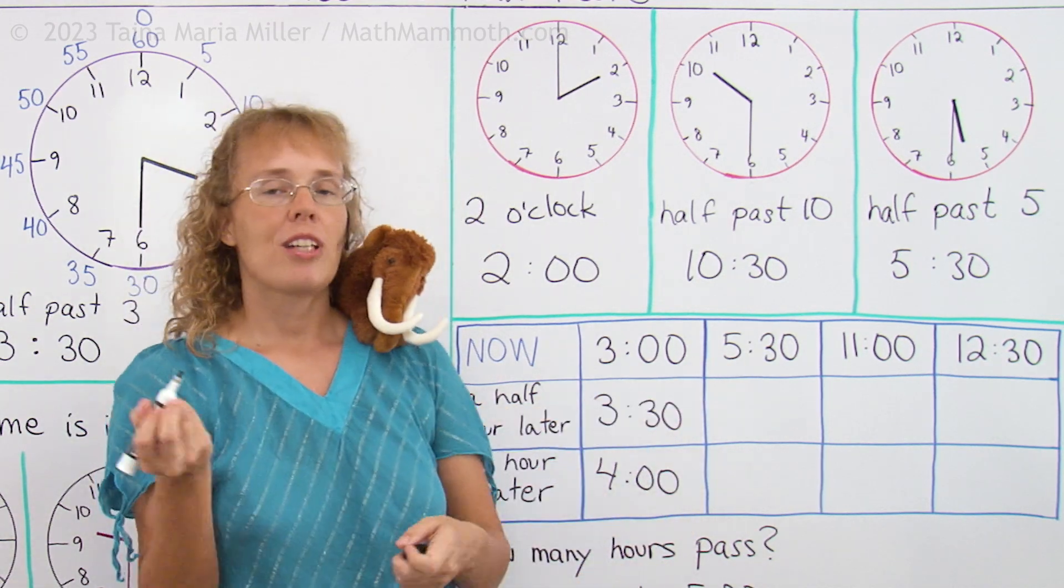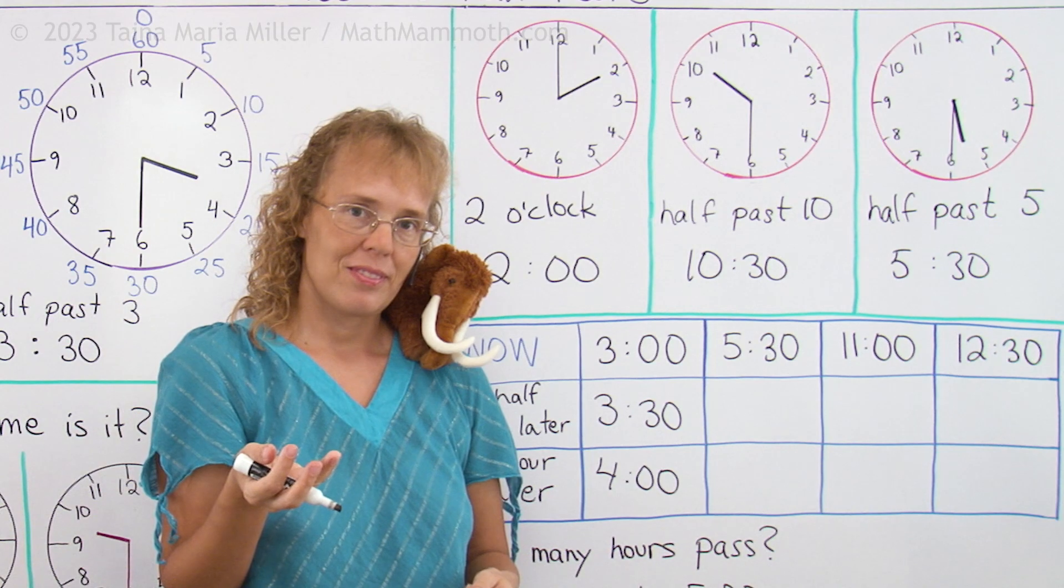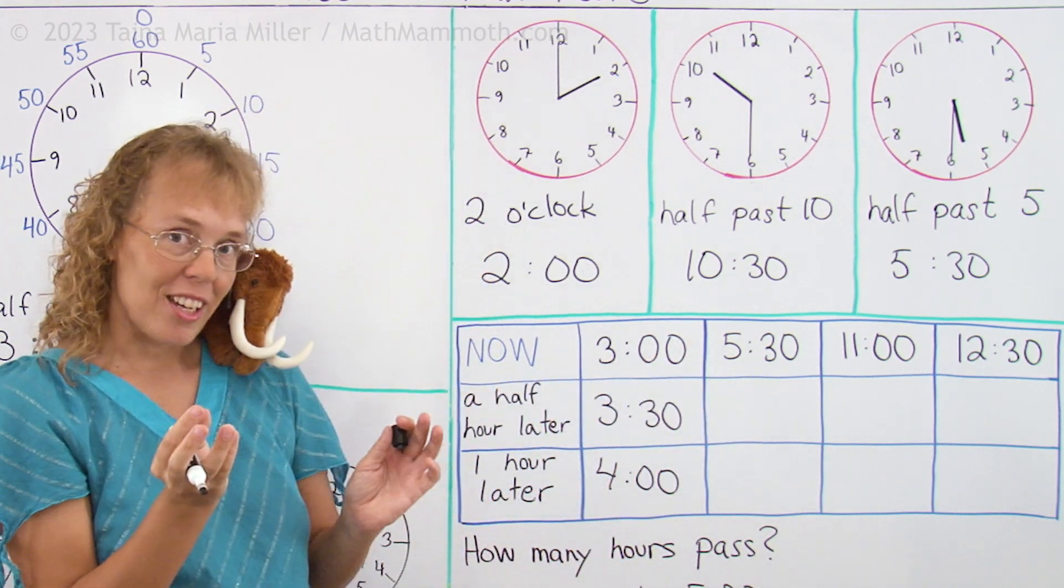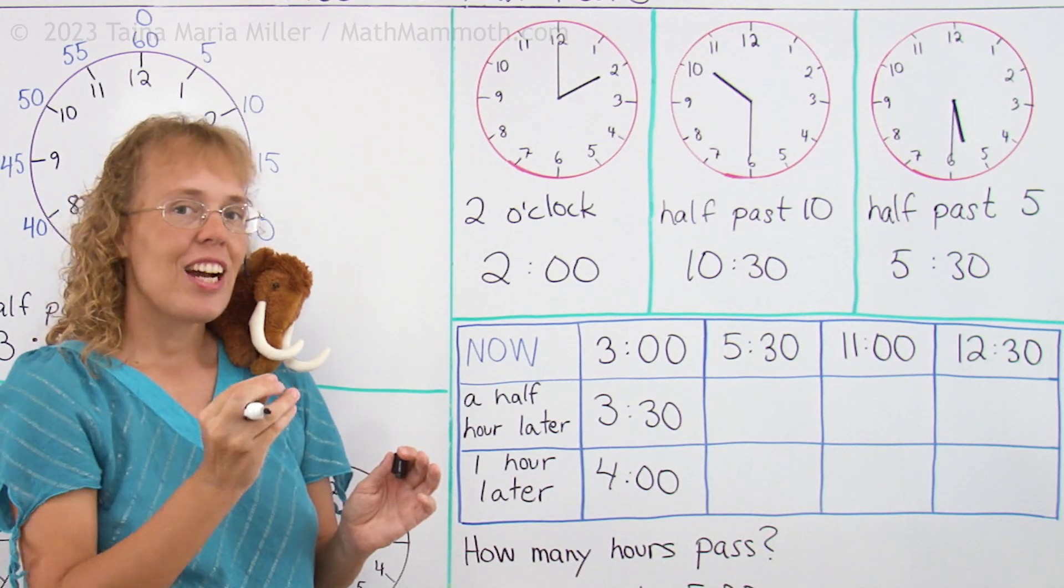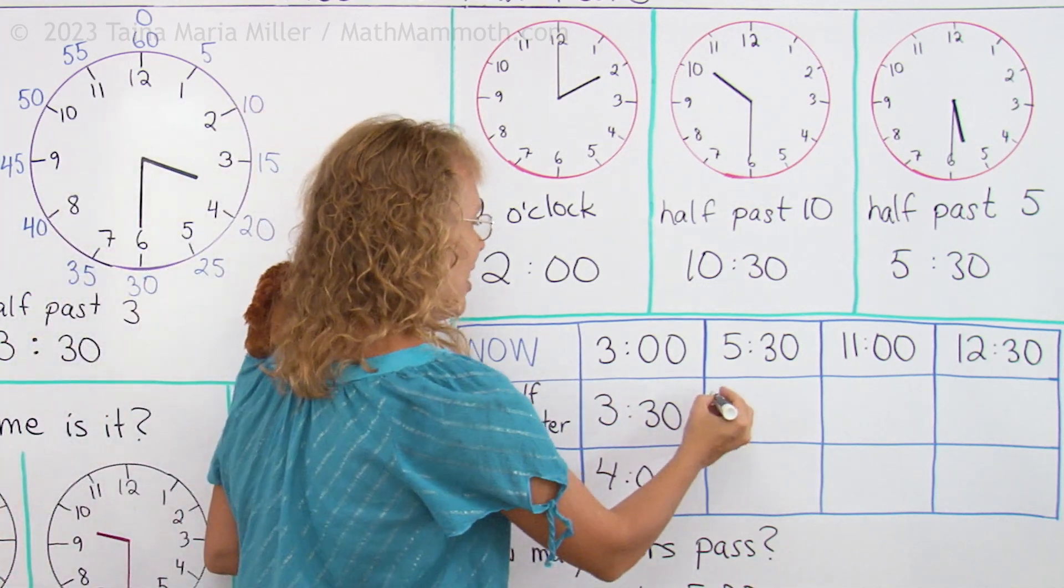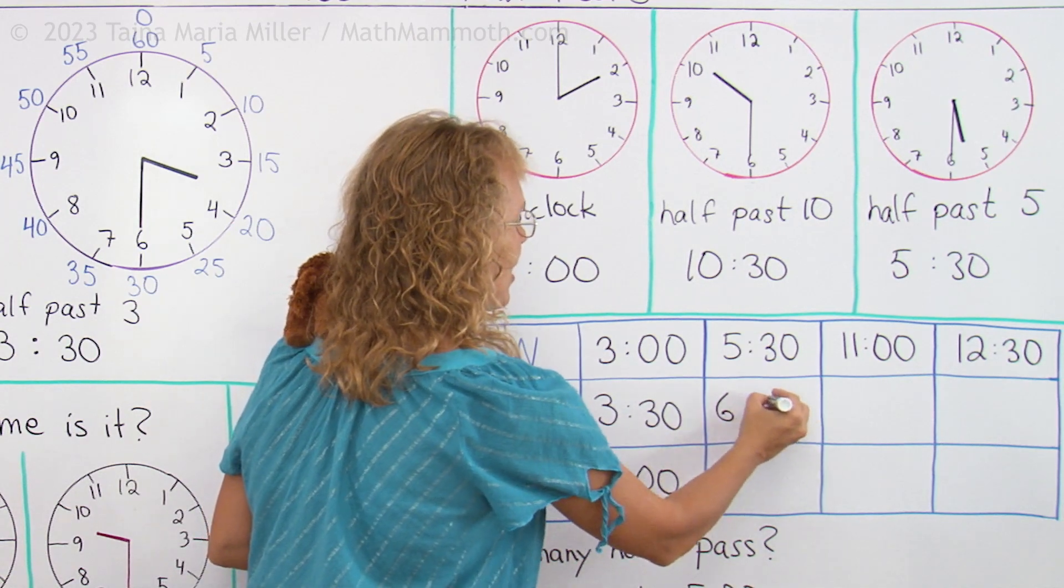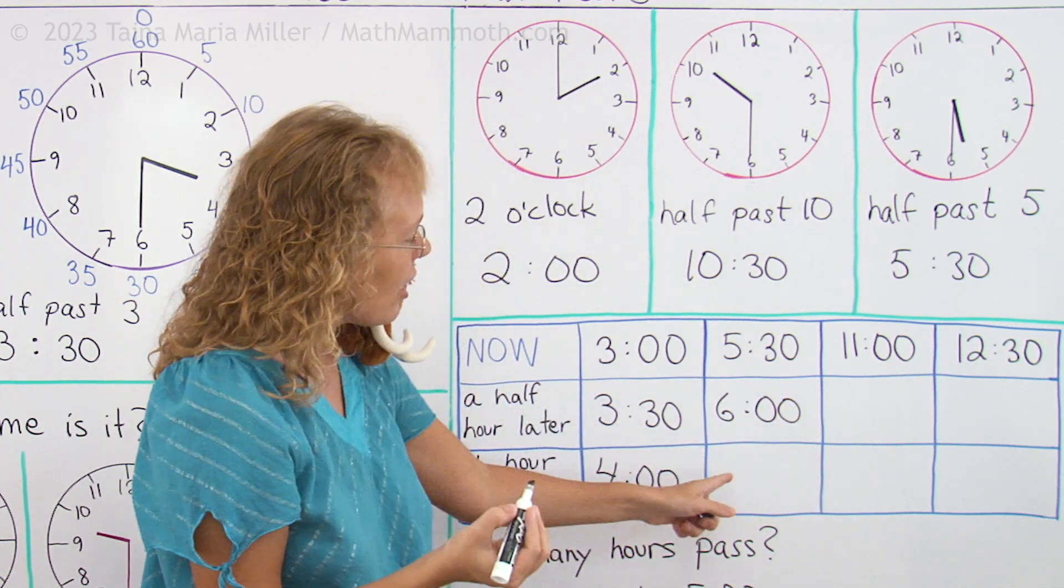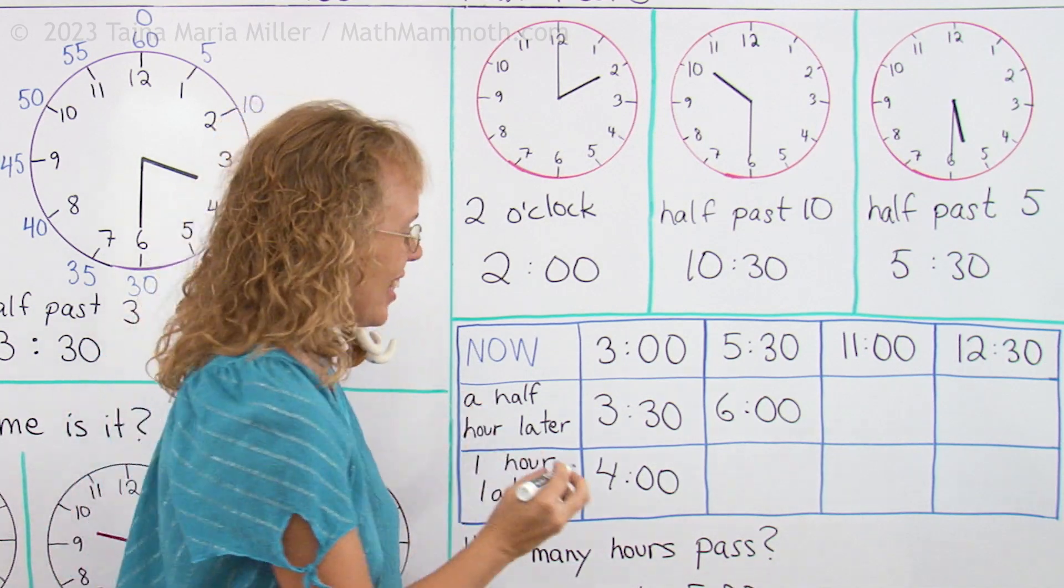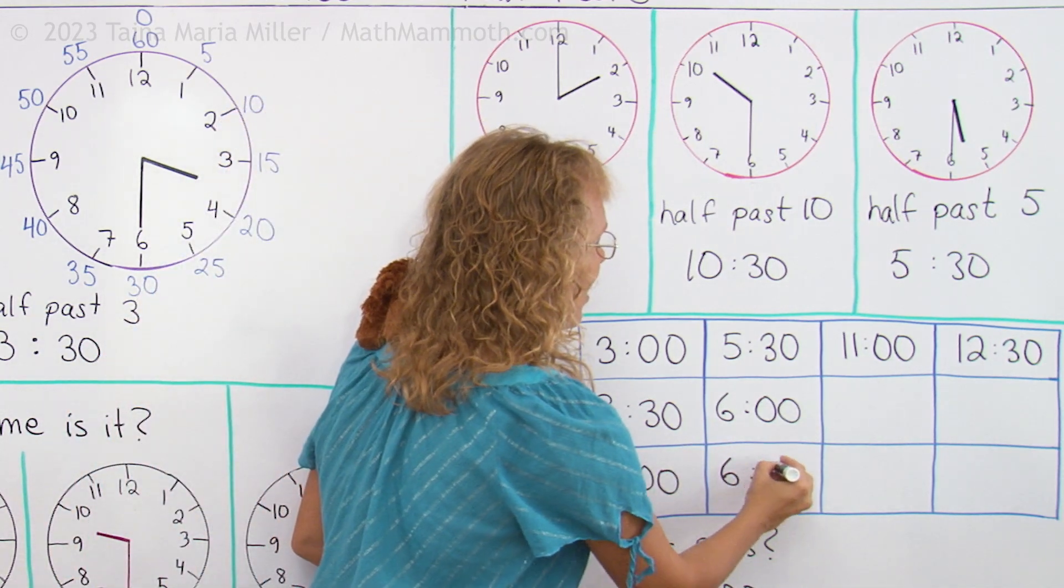If now it is 5:30, what time is it half an hour later? This is the same as half past 5. And then half an hour later, our hand will have moved to 6 o'clock. It will be 6 o'clock, 6, 0, 0. Half an hour later after 6 o'clock, half past 6, and that is the same as 6:30.